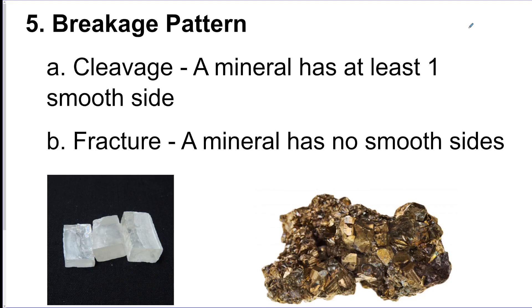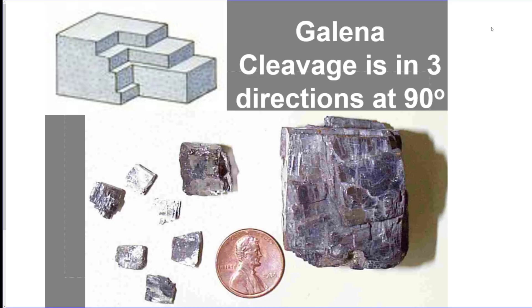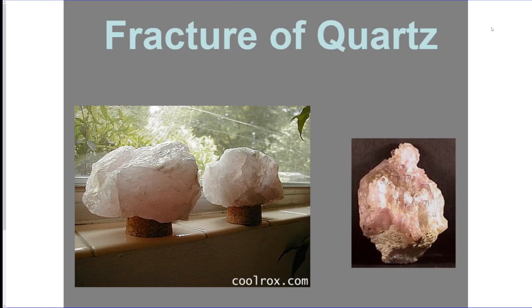Breakage pattern is next — it's either going to have cleavage or fracture. Cleavage has smooth sides, and fracture means it has no smooth sides. They're indicated by a check mark on the chart. If it's checked under cleavage, it has cleavage; if it's checked under fracture, it has fracture. Here's an example of cleavage with smooth sides, and that's fracture with no smooth sides.